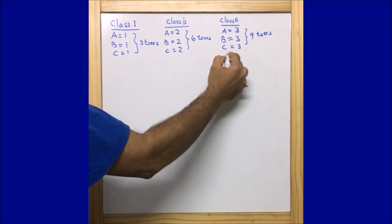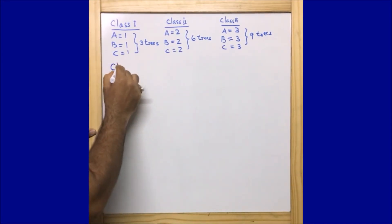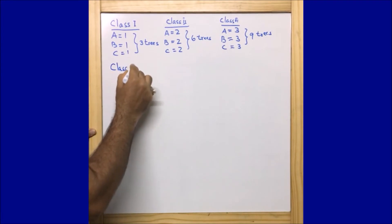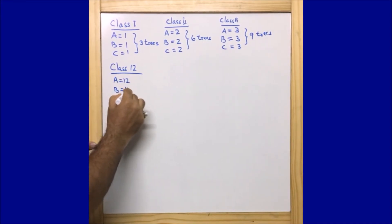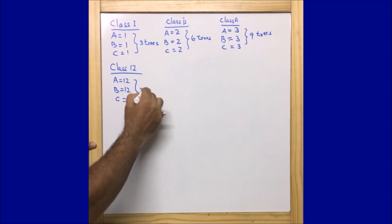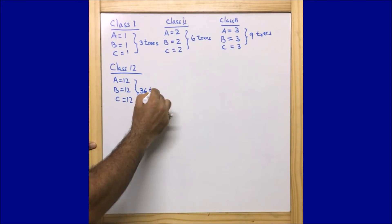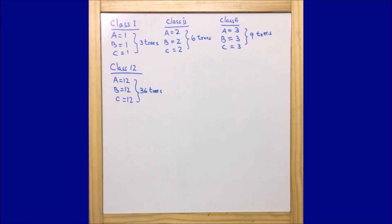For Class 12, section A will plant 12 trees, section B will plant 12 trees, and section C will plant 12 trees — that means altogether Class 12 plants 36 trees. Now our main job is to find out how many trees will be planted in total, counting from Class 1 to Class 12. To do this we will use the sum of Arithmetic Progression.